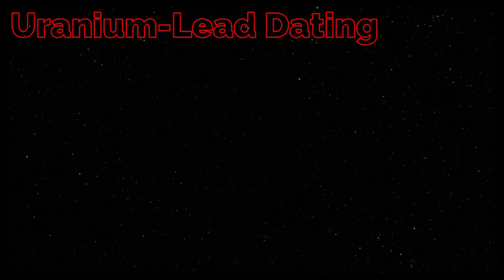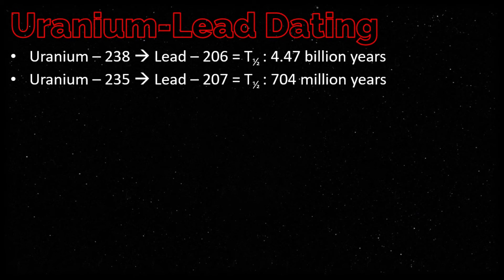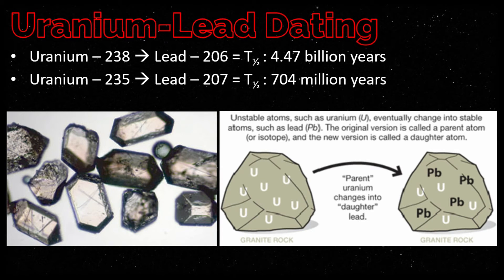Next we have uranium-lead dating. Two uranium isotopes are used for radiometric dating: uranium-238 decays to lead-206 with a half-life of 4.47 billion years, and uranium-235 decays to form lead-207 with a half-life of 704 million years.